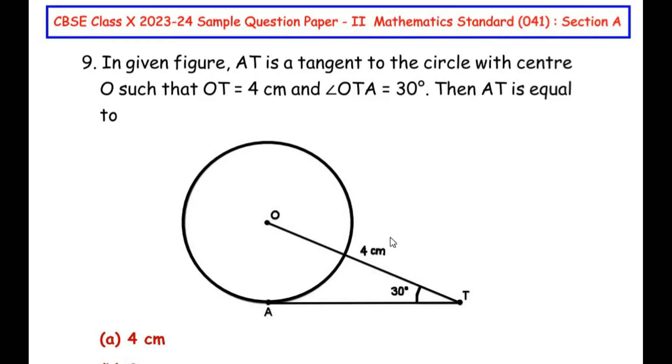Now this question is from the introduction to trigonometry chapter. In the given figure, AT is a tangent to the circle with center O such that OT is equal to 4 cm and angle OTA is given as 30 degrees. Then AT is equal to. So here we have to find out the length of the tangent AT.